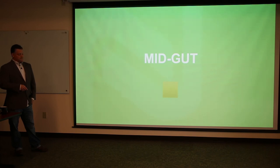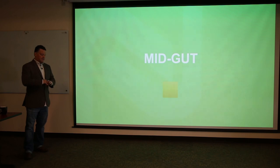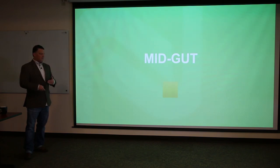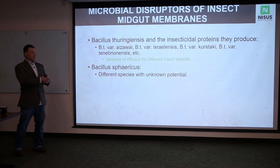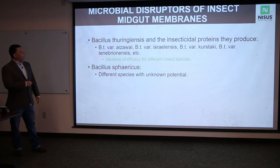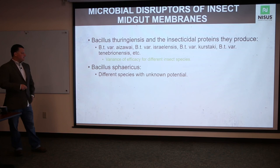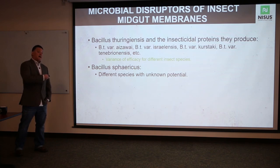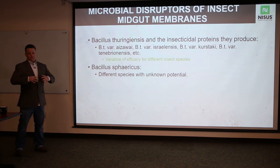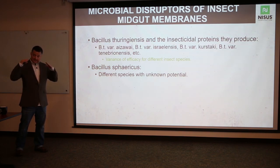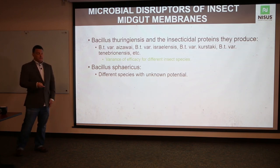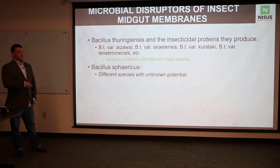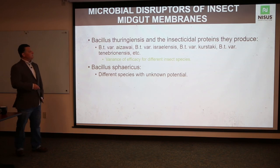Mid-gut insecticides focus on the midgut itself and generally must be consumed, though they may pass through spiracles if the formulation is developed properly. The main ones are Bacillus thuringiensis (Bt) variants — not very common in our industry but they can be obtained. The challenge is cost: to produce these materials you have to grow bacteria in large vats, raise the toxin level, kill all the bacteria, and use the remaining toxin — so a gallon can run $200–$300, though it is very effective.